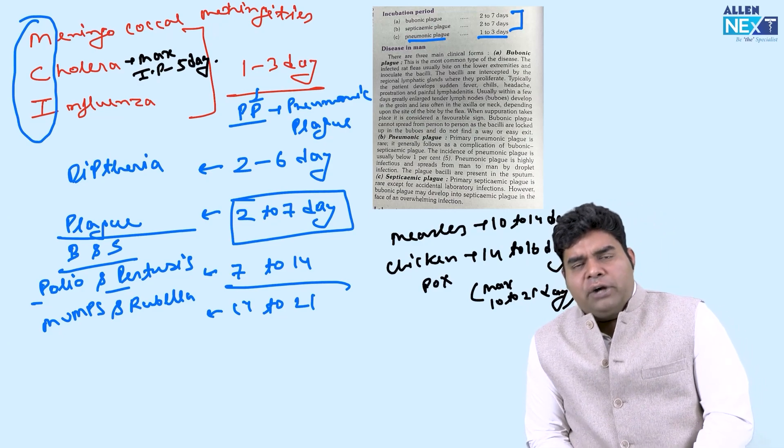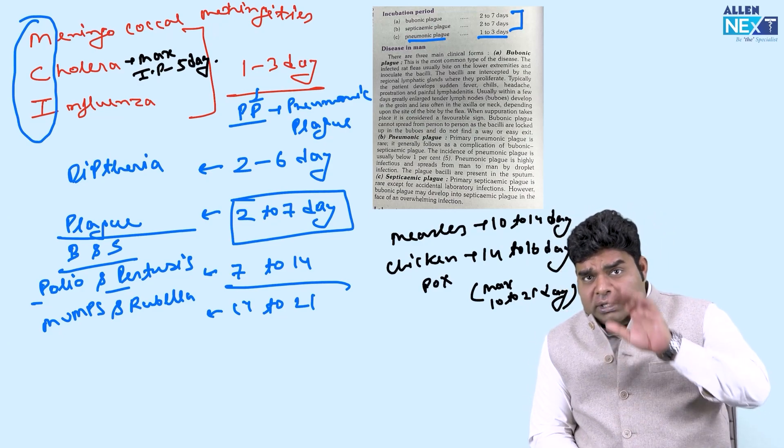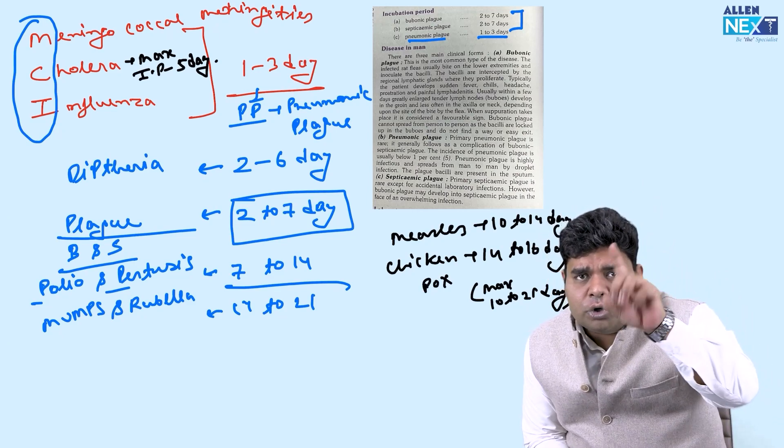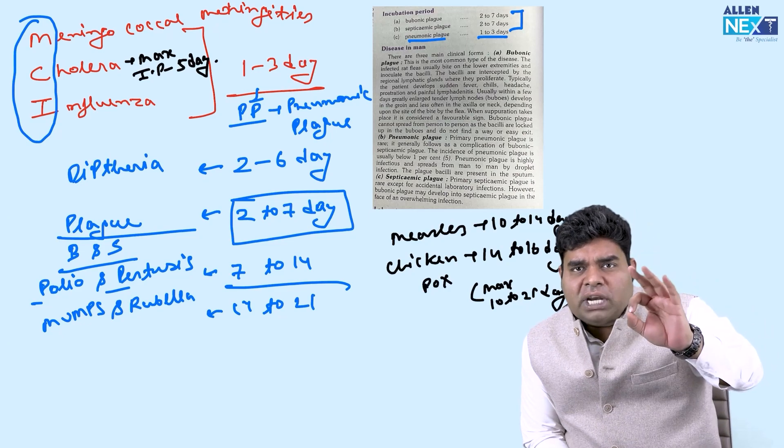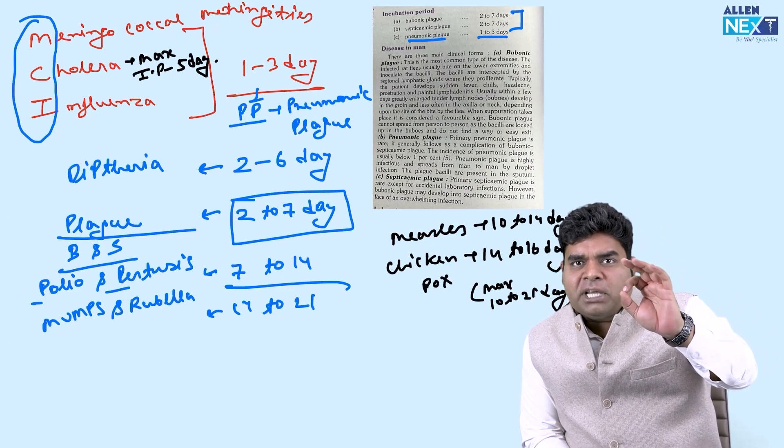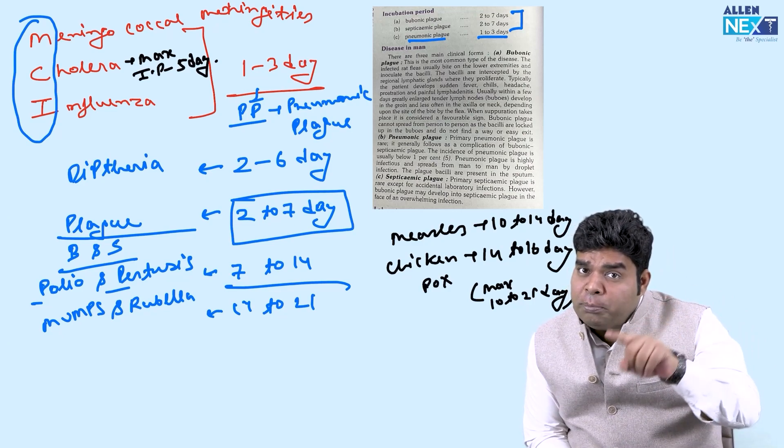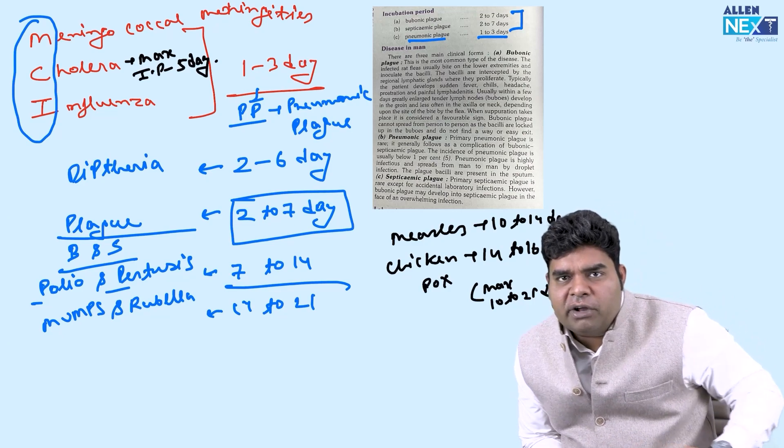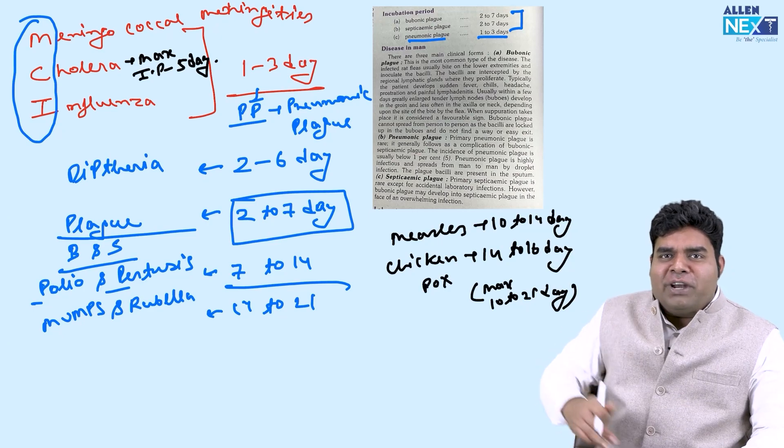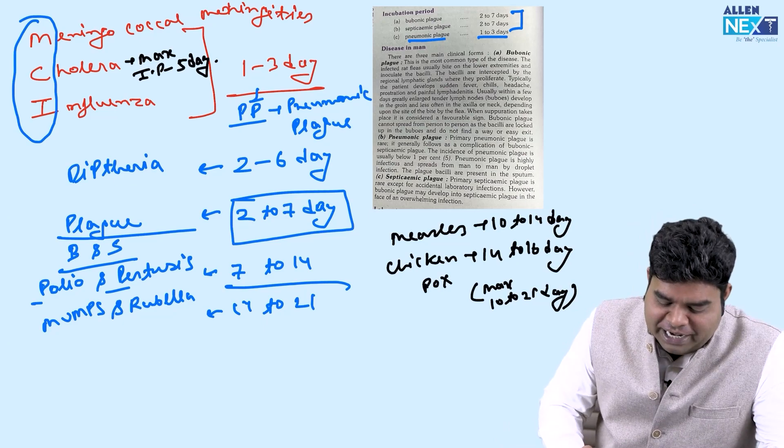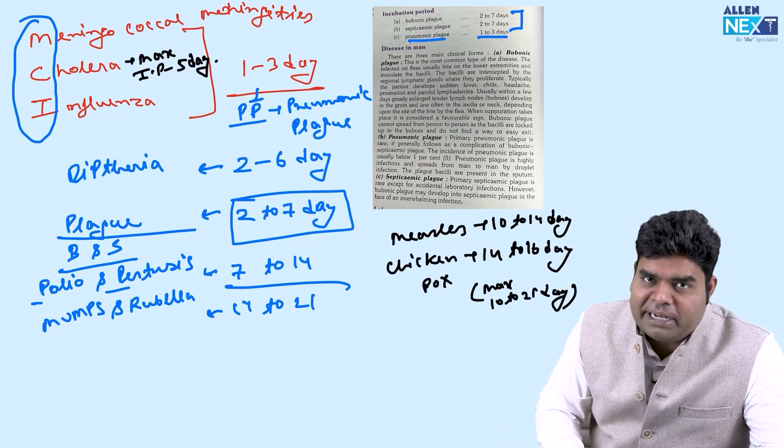Can you remember it all? Try to remember it and write it by your memory. Pause the video, remember it right now and then write it from your memory. I am sure you all can do that. 1 to 3 for MCI, 2 to 6 diphtheria, 2 to 7 plague, 7 to 14 for polio P for pertussis, 14 to 21 mumps rubella, and then 10 to 14 for measles, 14 to 16 for chicken pox, and in a flow you can remember it. We are left with just three types of hepatitis.